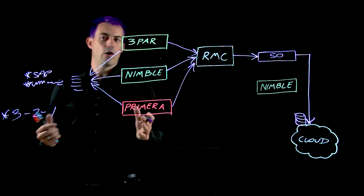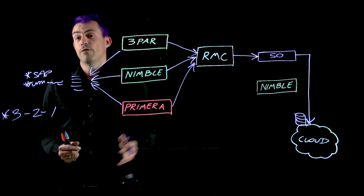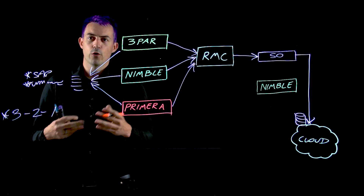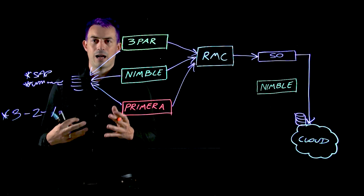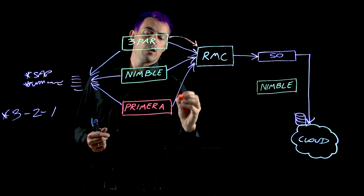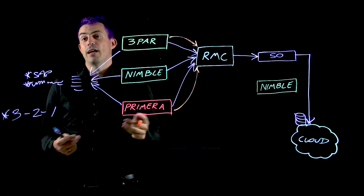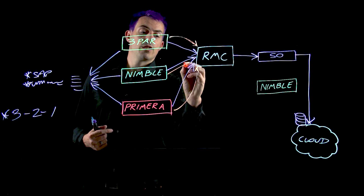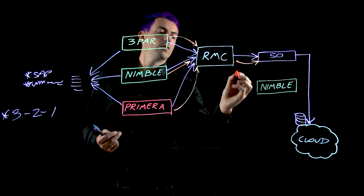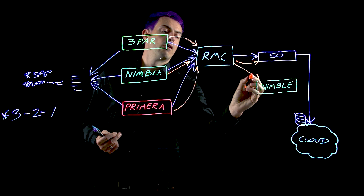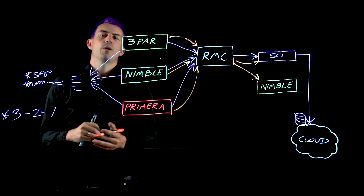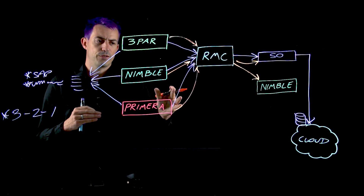You'll notice I've got a Nimble here that hasn't got anything pointing to it — it's not just there for show. Within RMC we also have a function called Peer Copy. Peer Copy gives us more flexibility, so StoreOnce is no longer an absolute requirement. RMC can take snapshot management and do peer copies either to a StoreOnce as before, or go straight to a Nimble array. This gives us a degree of flexibility — if you already have a Nimble array in the environment, you can place a Primera or 3PAR there, move Nimble to DR, and not sacrifice functionality.